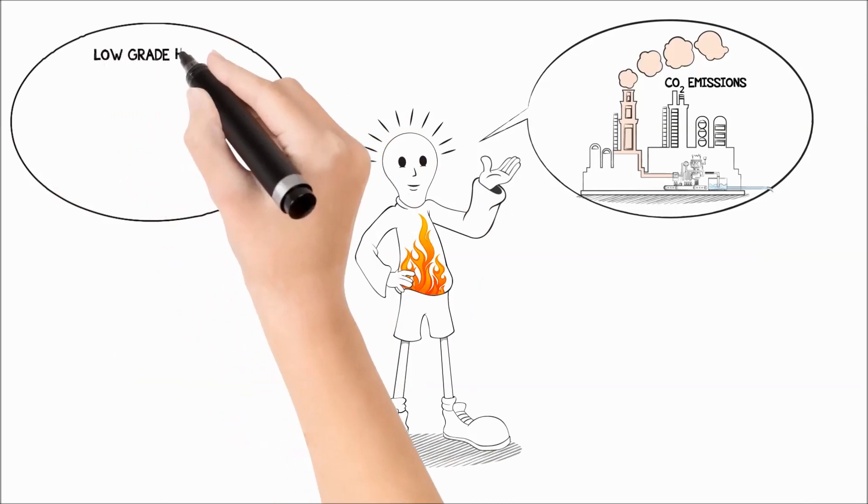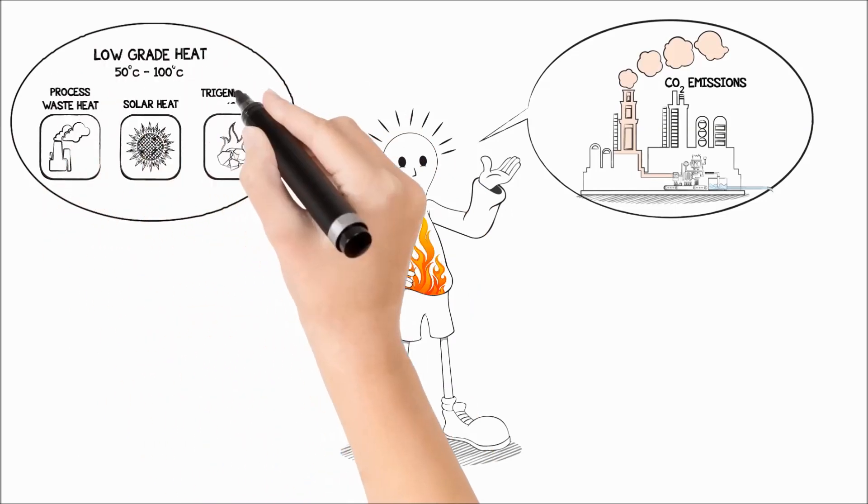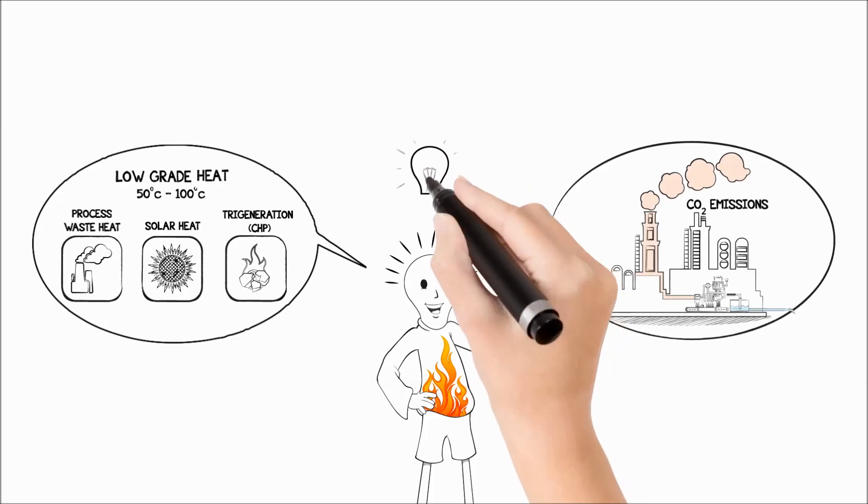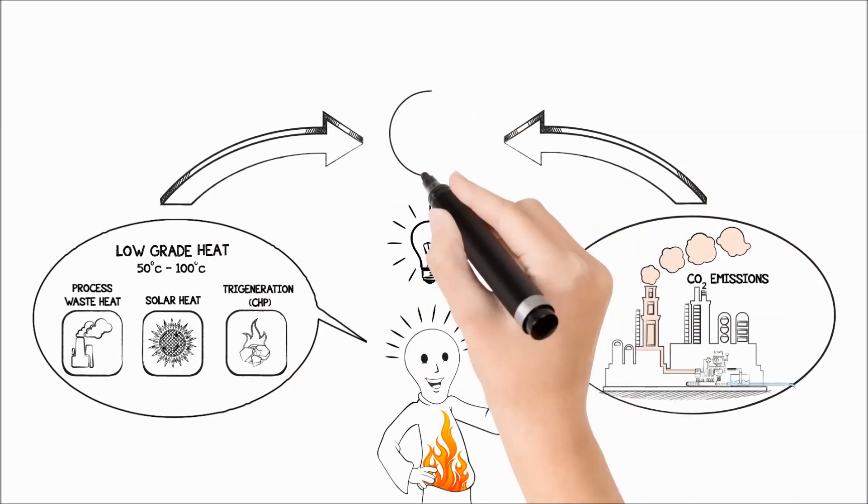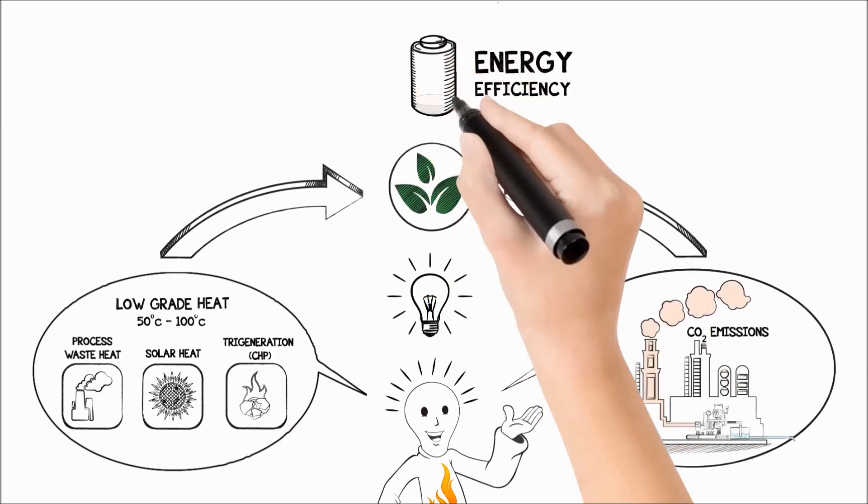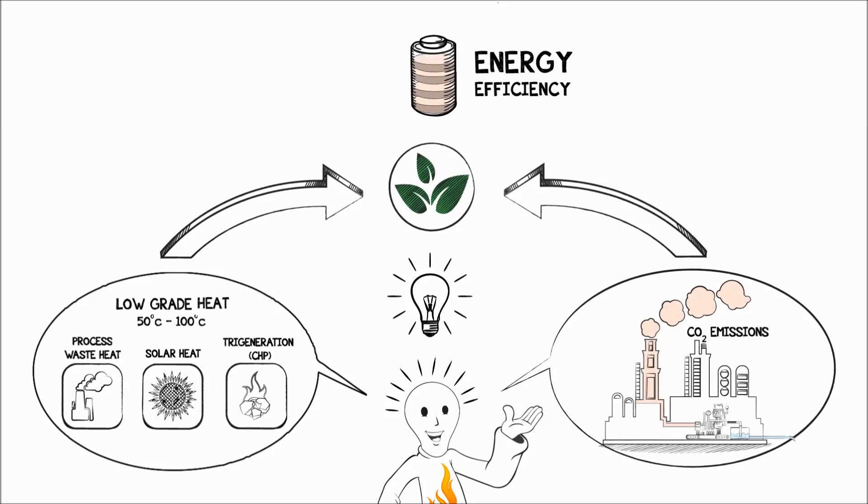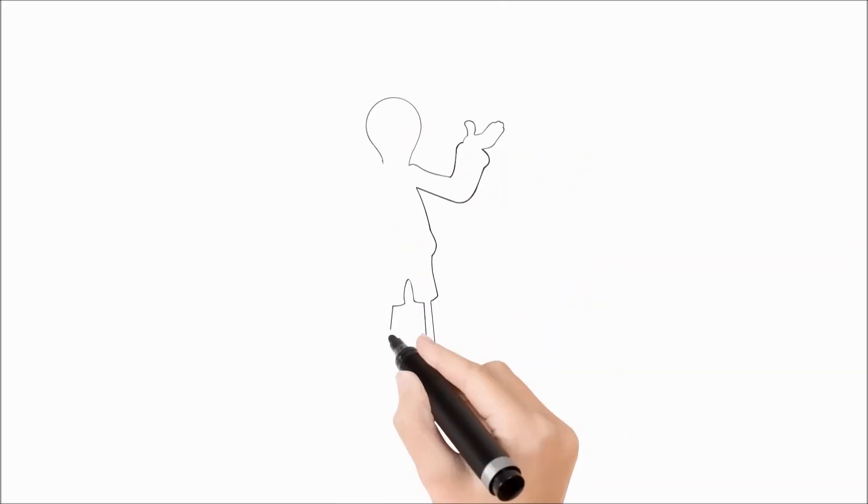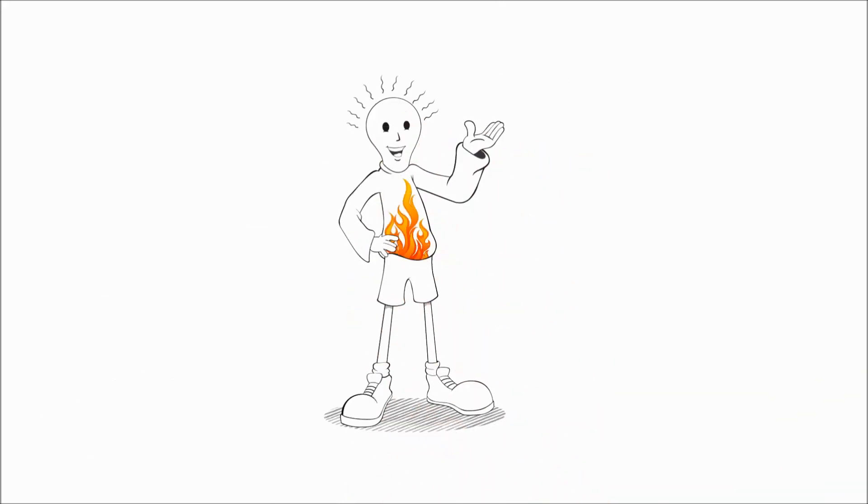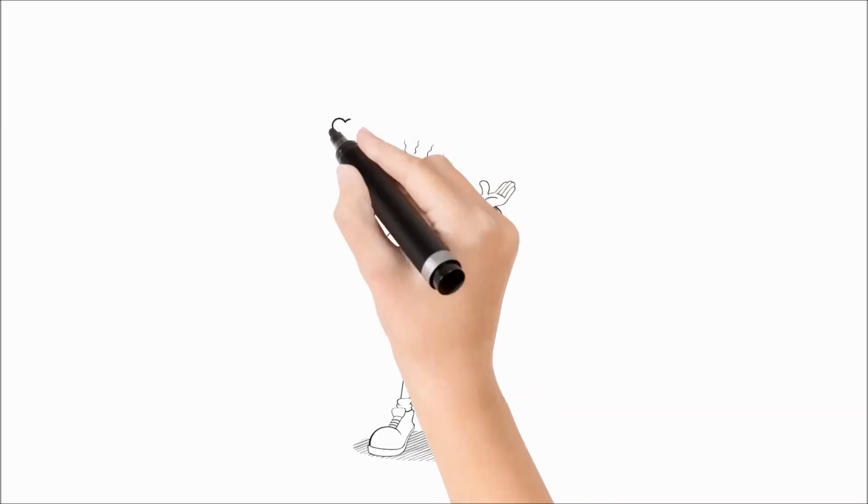...and low-grade heat which is 50 to 100 degrees Celsius going to waste, worry no more. Because now there's an eco-friendly way to optimize energy efficiency. The Air Geneer from Briair, the pioneer of innovative technologies, brings you for the first time in India Briair absorption chillers.